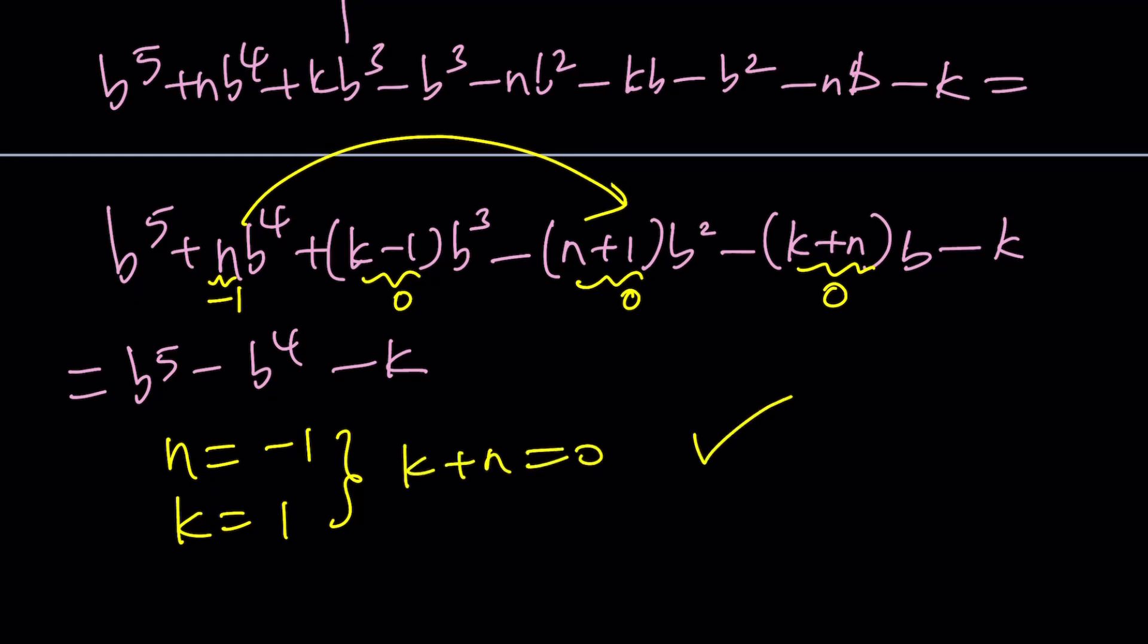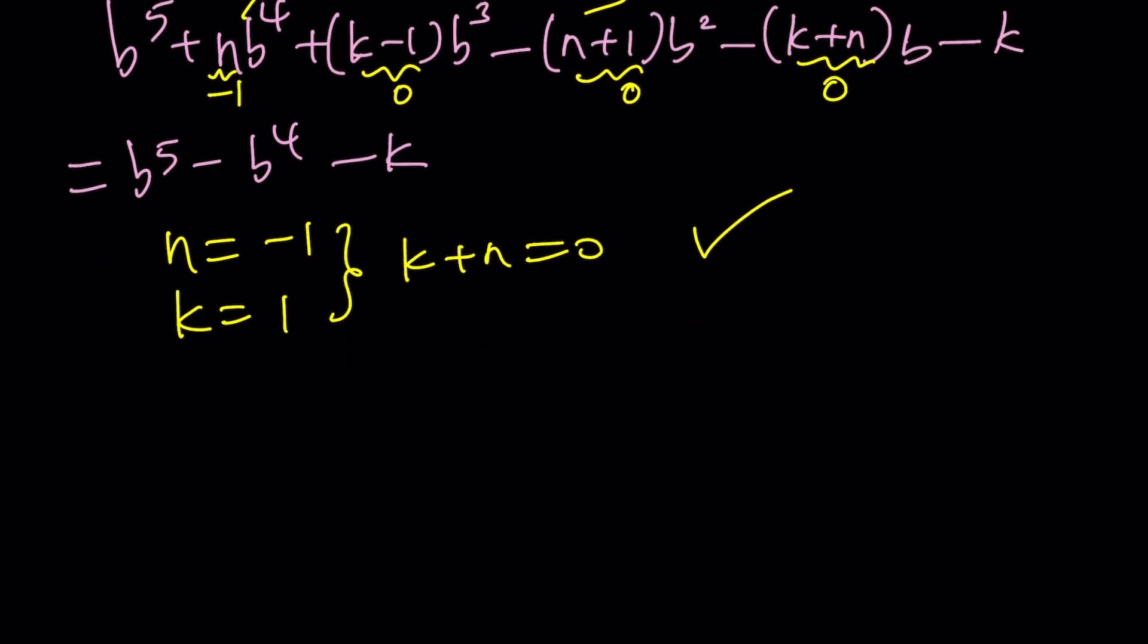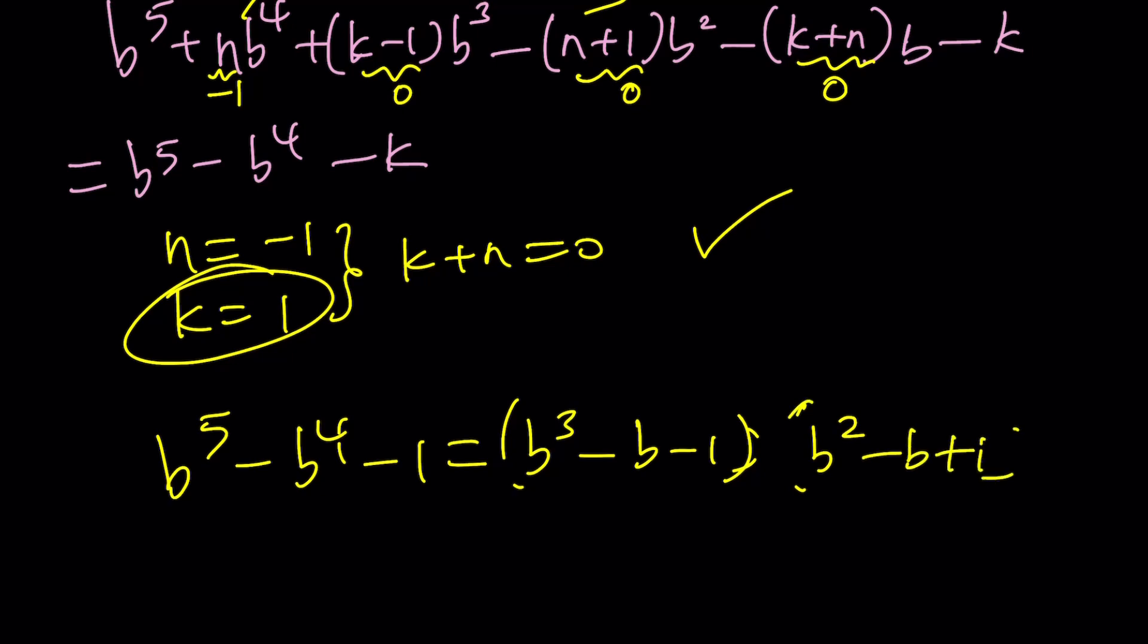Awesome. We got the values, but guess what? Do you really need n? Not really, but here's the thing. We were looking for k, so we got it. k equals one is the answer. But this has a nice conclusion, which tells us that this quintic can actually be factored into this and that. And b squared minus b plus one is actually a very special quadratic.